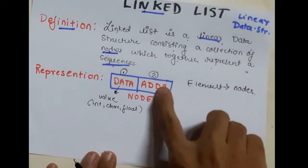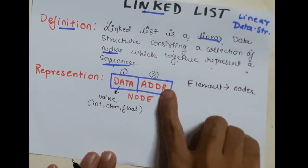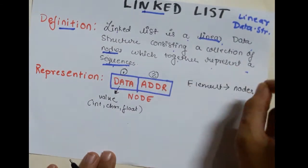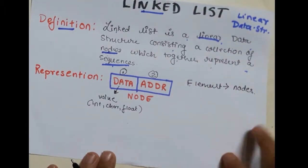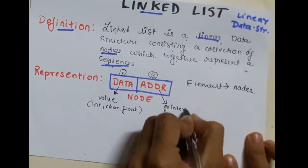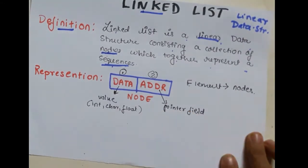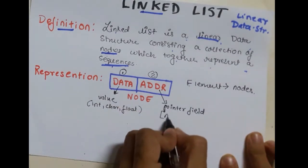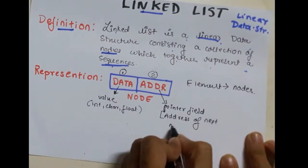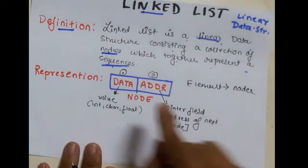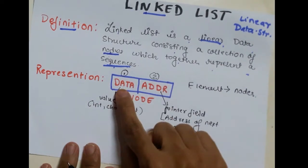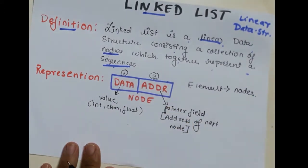The address field will consist of the address of the next node, so this is a pointer field. Address field is nothing but the pointer field, and it will contain the address of the next node. So a node consists of two fields: data field and address field, which is also called the pointer field.